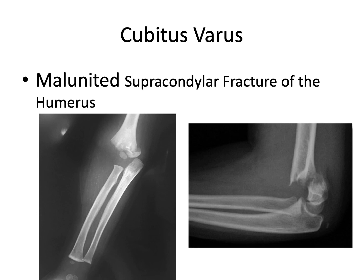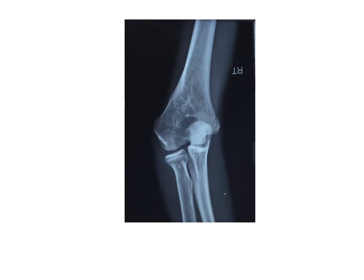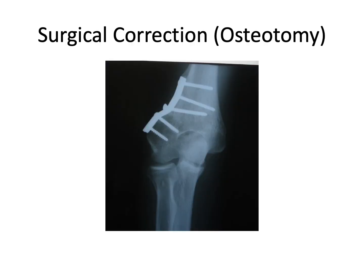Cubitus varus is a well-known deformity resulting from a malunited supracondylar fracture of the humerus. It often fails to correct spontaneously and remains into adult life, causing disability. As seen in this x-ray, the distal humerus is deformed and the elbow joint line is oblique. Surgical correction is needed in severe cases causing disability, and depending upon the age, the suitable method of fixation is chosen. In this adult patient, a plate and screw fixation was necessary.